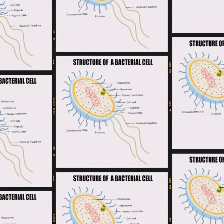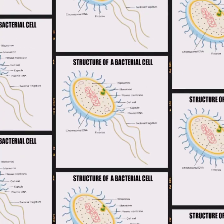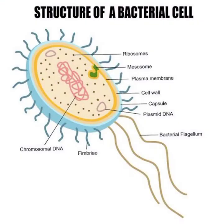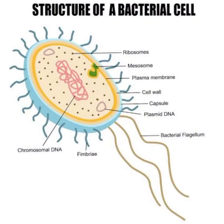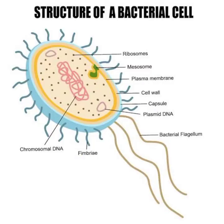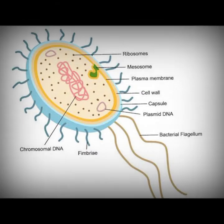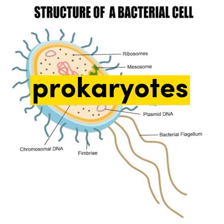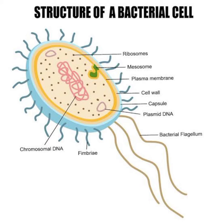Bacteria is a unicellular organism. It is smaller in size than plant and animal cells. Its cell is very simple in comparison to plant and animal cells. Bacteria are prokaryotes — organisms which lack a true nucleus and membrane-bound organelles.